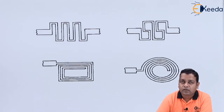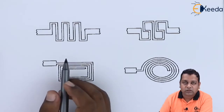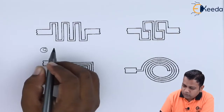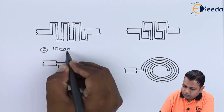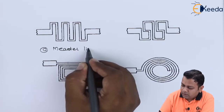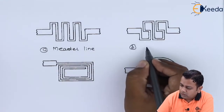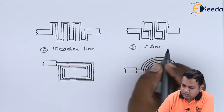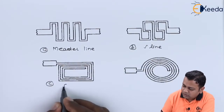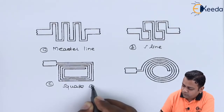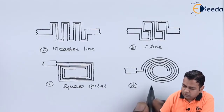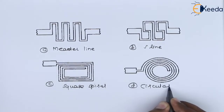After the formation of the planar resistive film, let us have an introduction to the planar inductive film. For the planar inductive film we also have certain configurations. The first type of inductor line is the meander line. The second one is called the S-line. The third one is called the square spiral. And the fourth one is called the circular spiral.